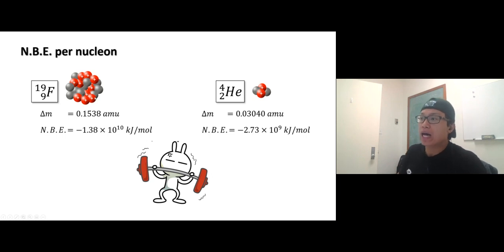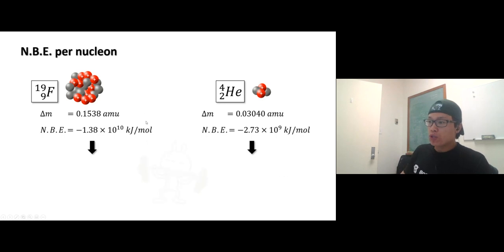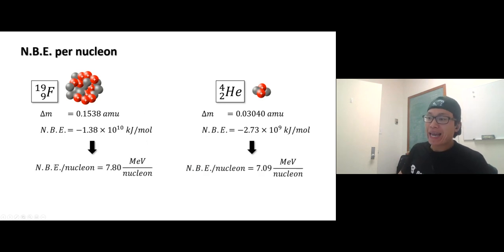Same thing here: the nuclear binding energy has to be compared to how many nucleons are there. All right, so if you do nuclear binding energy per nucleon, for fluorine it's 7.8 MeV per nucleon. Mega electron volt is another type of unit of energy besides joules. So anyway, fluorine is 7.8 but helium is 7.09, so fluorine is more stable than helium. Nuclear scientists do calculations to calculate nuclear binding energy per nucleon for all isotopes, and they came up with this graph.